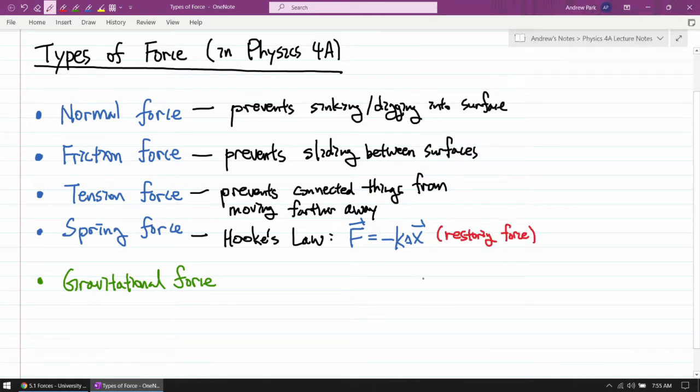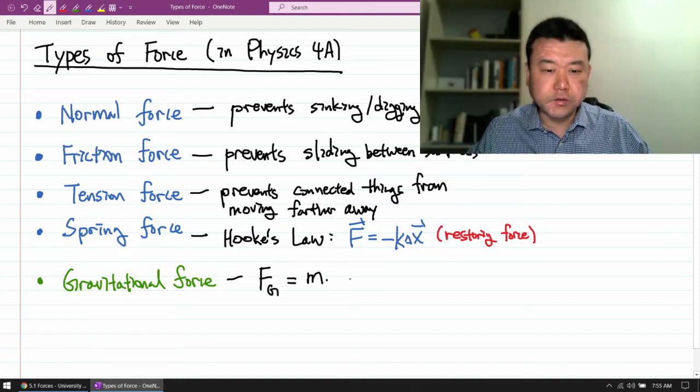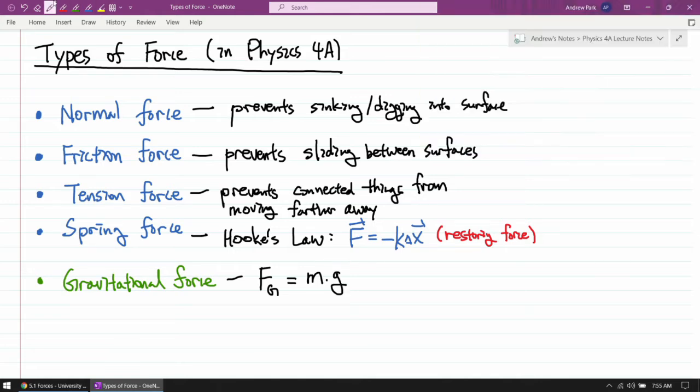And for gravitational force, which we'll talk about more, for now, the important thing is it's given by mass times the strength of gravitational field or gravitational acceleration. And the important distinction to draw here is that all these forces, the first four forces that I said in blue, are contact forces. And there's only one in the list that is not a contact force.